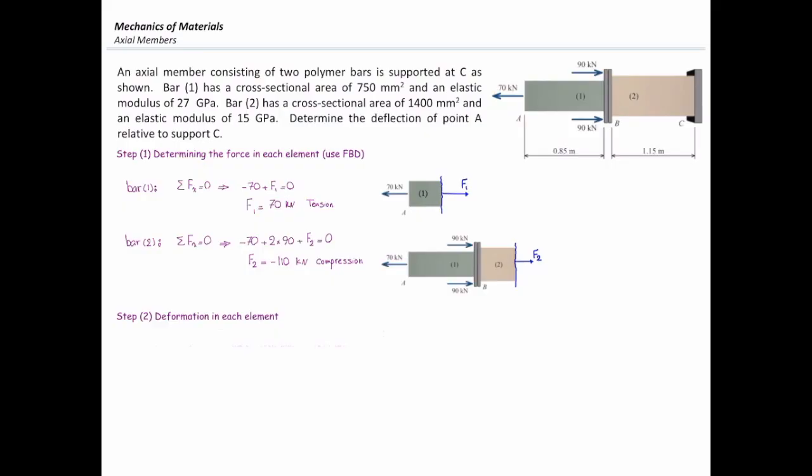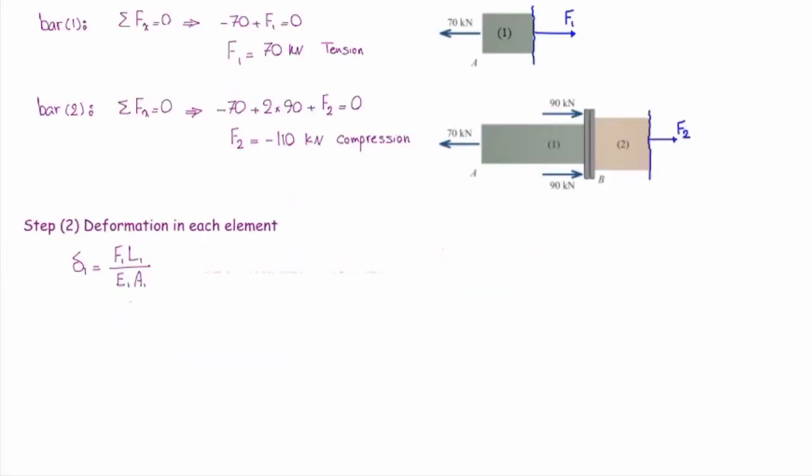We use the equation that we just talked about. Delta is FL over EA. So, for determining deformation in element number one, I will use associated parameters. Internal force in element number one is 70 kilonewtons. I need to convert that into newtons. So I will multiply that by 1000. Length of element number one is 0.85 meter. I'm going to multiply that by 1000 to convert that into millimeter.